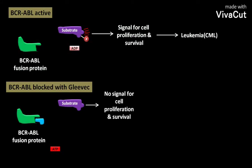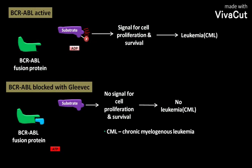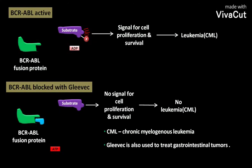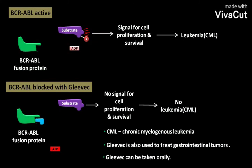This unphosphorylated substrate transmits no signal for cell proliferation and survival, so no leukemia like CML occurs. CML stands for chronic myelogenous leukemia. Gleevec is also used to treat gastrointestinal tumors and can be taken orally.